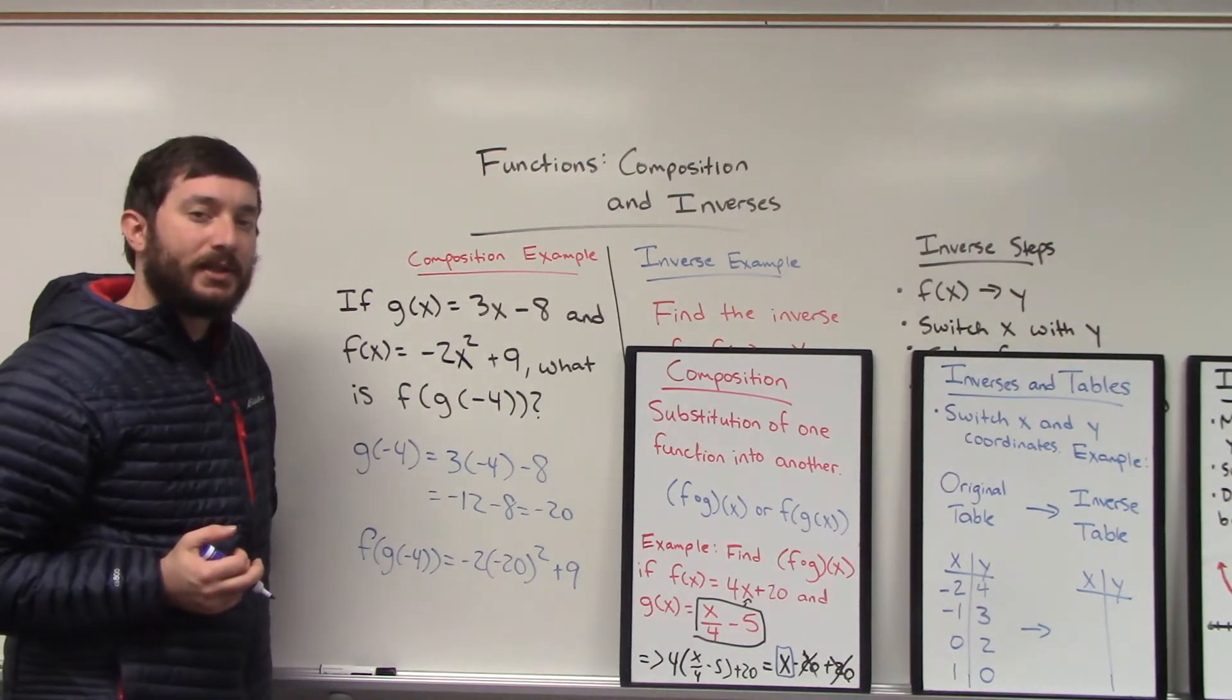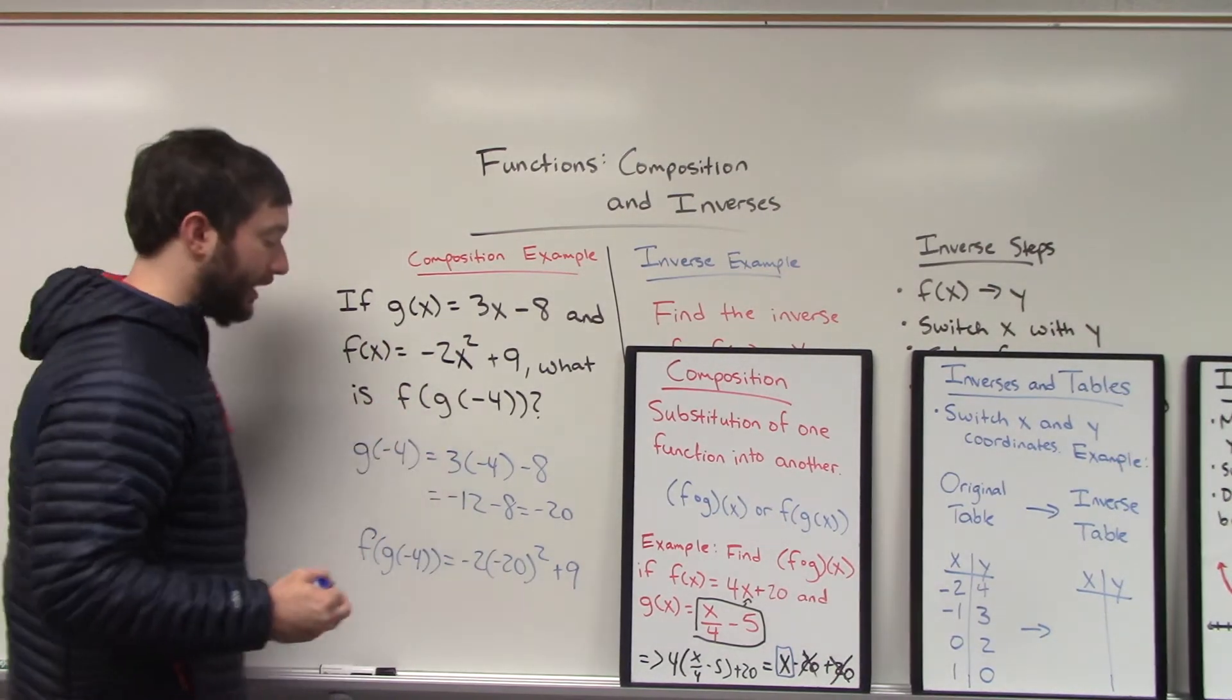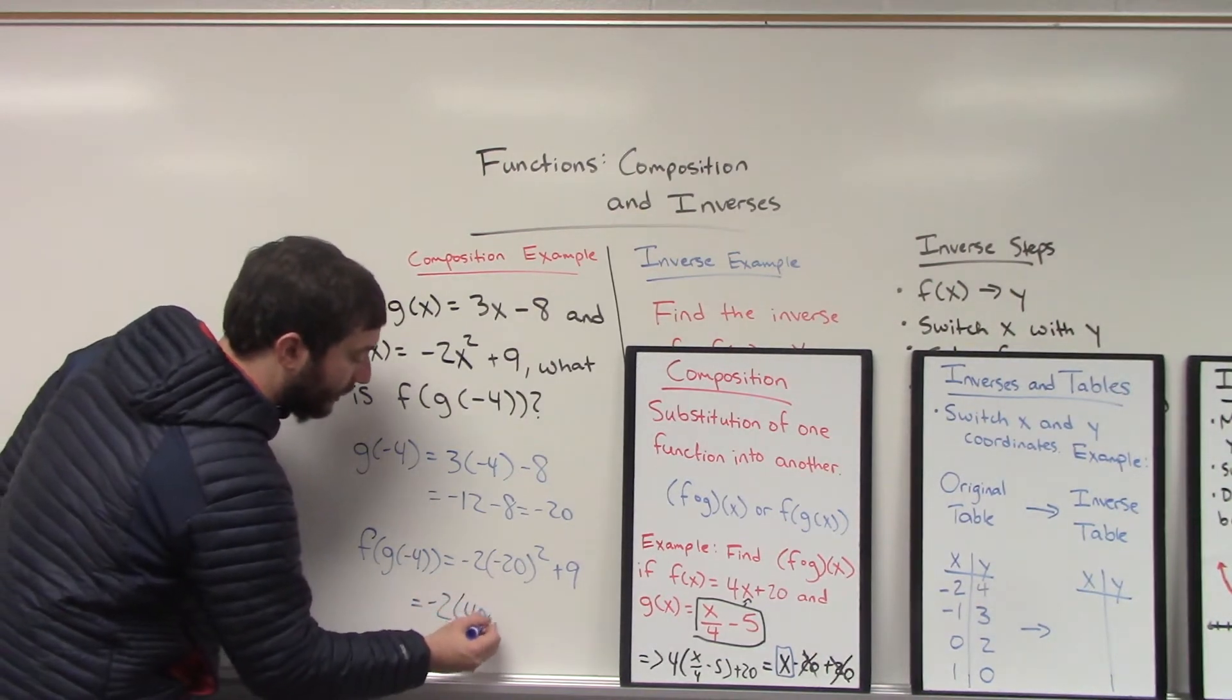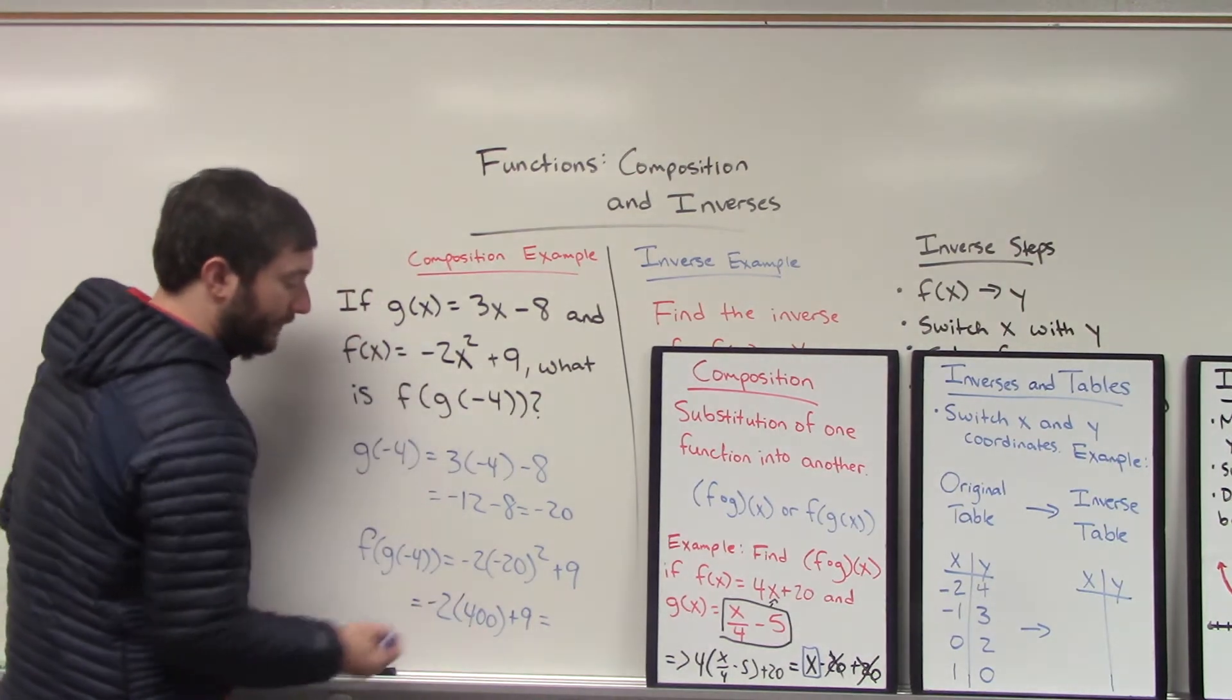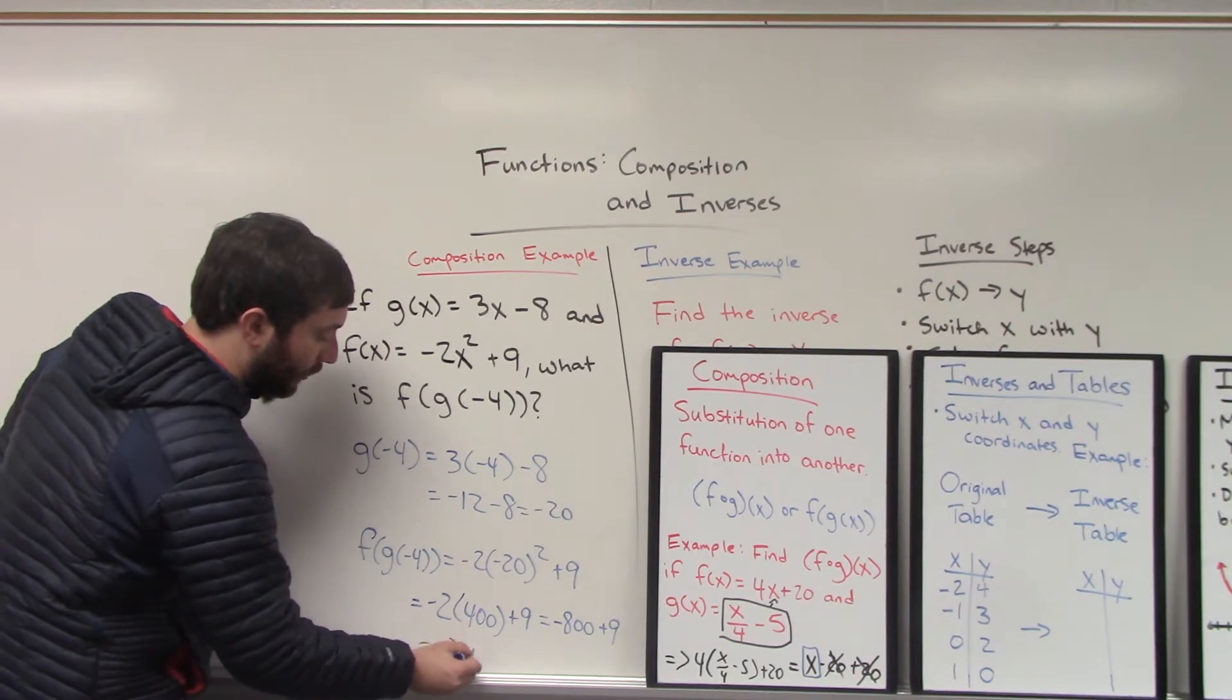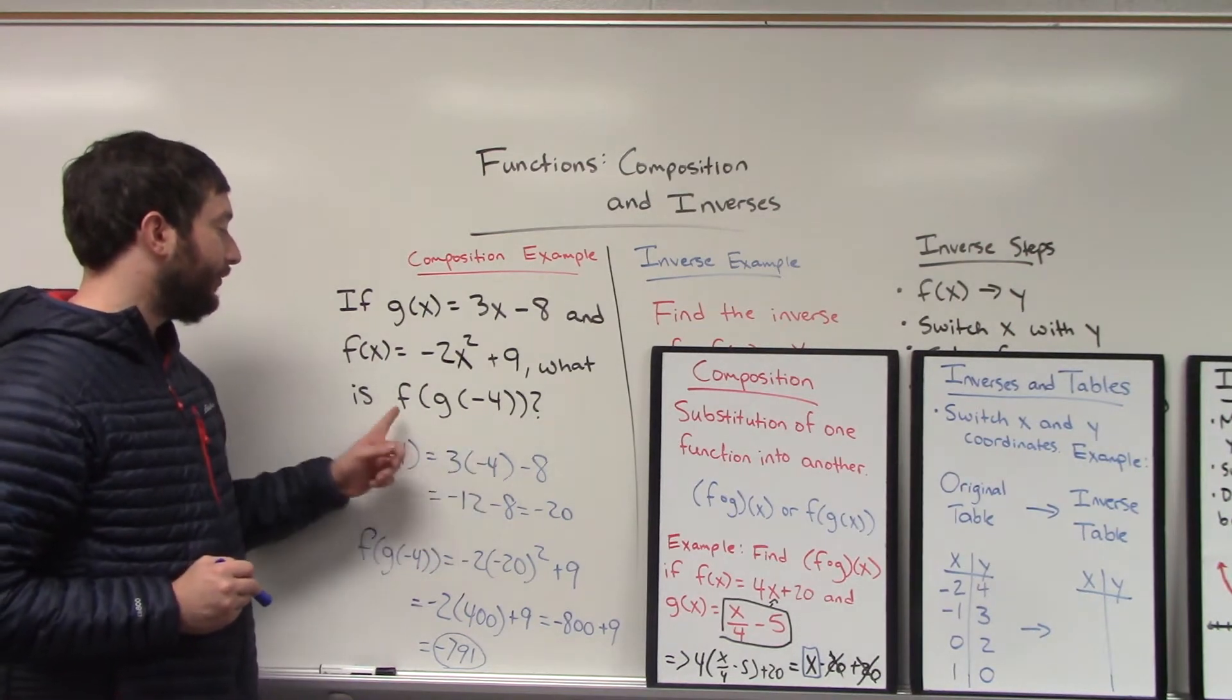So here, you will have to remember PEMDAS: parentheses, exponents, multiply, divide, add, subtract. We need to do something with our parentheses and exponent first. We need to square negative 20, so don't multiply by negative 2 just yet. We will do that shortly. Negative 20 times itself would be positive 400. Remember, a negative times a negative is a positive. We have that positive 9 off to the side. Negative 2 times 400 is negative 800, and adding that by 9 will give us our final answer of negative 791. This is a very strange number, but that's what happens when you plug negative 4 into g, as our original question asks, and then that result into f.